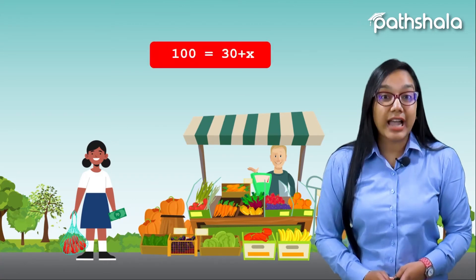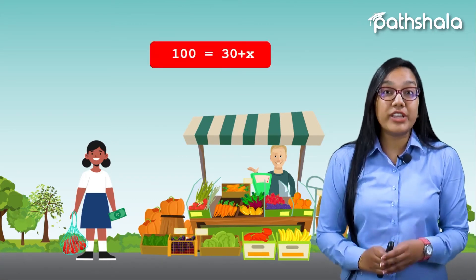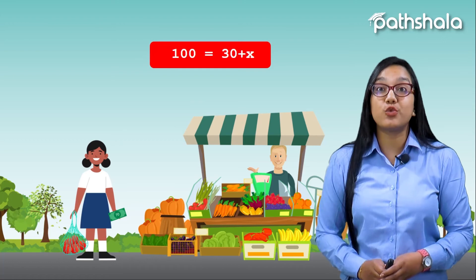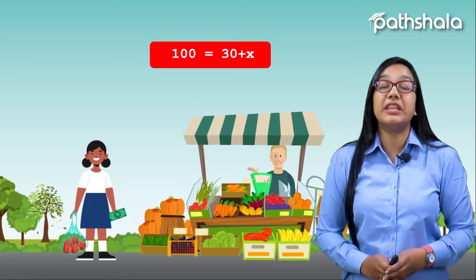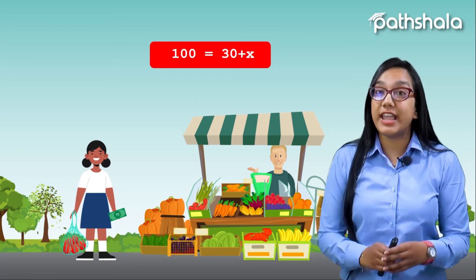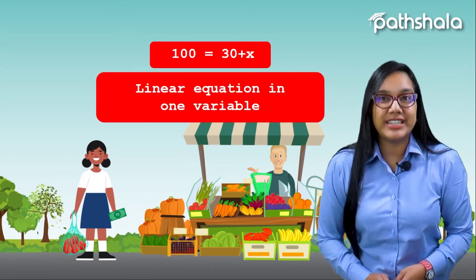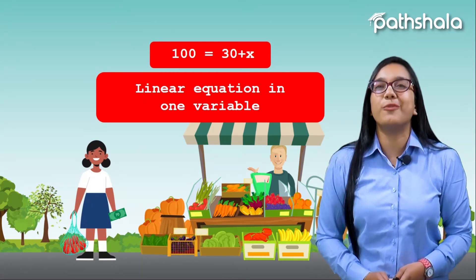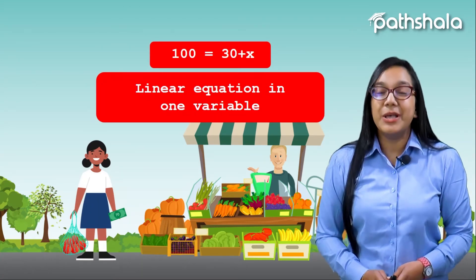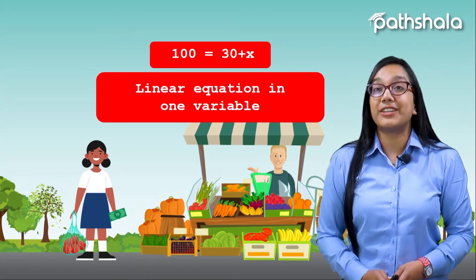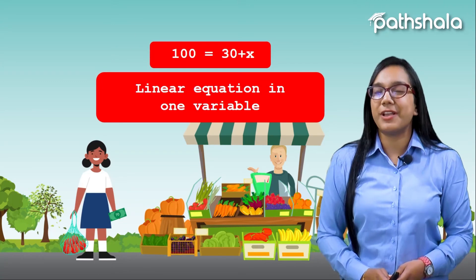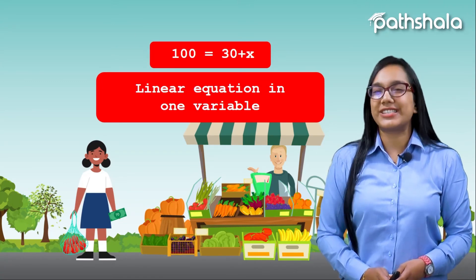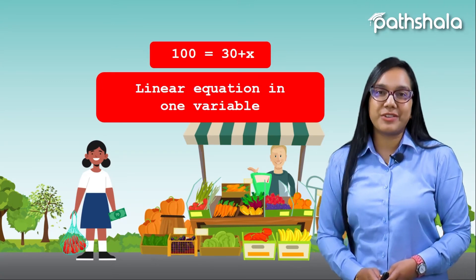What we have concluded from this story is that the equation used by Lata to find out how much money was left is nothing but a linear equation in one variable. This is all about the chapter we are going to start, so let's learn this chapter in brief.